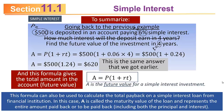One other thing: this formula can also be used to calculate the total payback on a simple interest loan. In this case, capital A is called the maturity value of the loan, representing the entire amount paid back — which includes both the principal and the interest. So capital A can be the future value for a simple interest investment, or the maturity value for a simple interest loan. The same formula is playing double duty.